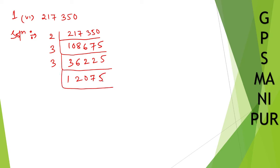By 3 I can divide once more. 3 times 4 is 12, 0, 3 times 2 is 6, 3 times 5 is 15.